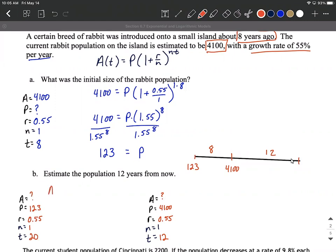So we can say this is A of 20 calculated as 123 multiplied by 1 plus 0.55 over 1 raised to the 1 times 20 power.